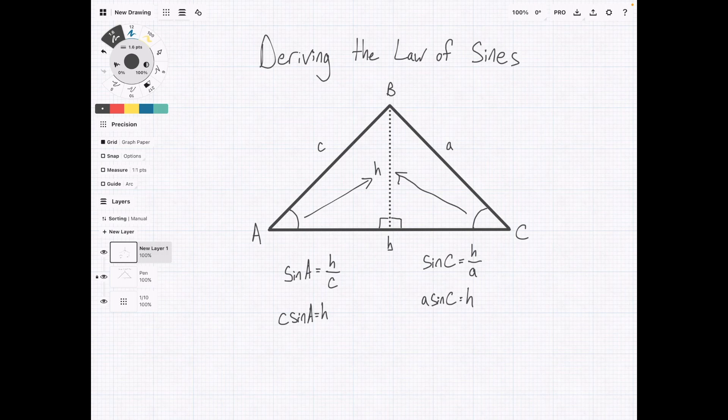We can see that both of these equations are equal to H so we're actually going to set them equal to each other. C sine A equals A sine C.